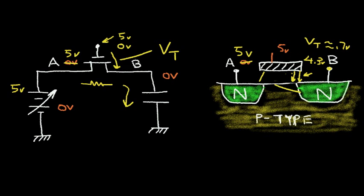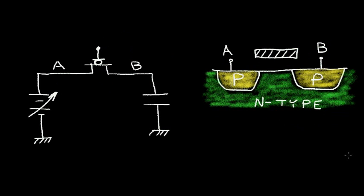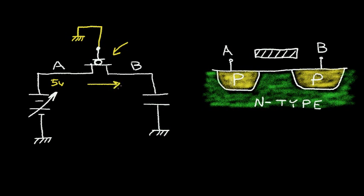Let's see how we can fix this problem by using a P-channel transistor instead of an N-channel transistor. I've replaced the N-channel transistor with a PMOS transistor. If I want to close the switch on the PMOS transistor, I'm going to connect the gate voltage to ground. If I want to open the switch, then I'll connect the gate voltage to the high supply and the transistor will be off. Let's consider the case where I want this transistor to be on with the gate at ground, and consider transferring a high voltage — 5 volts at point A to point B.